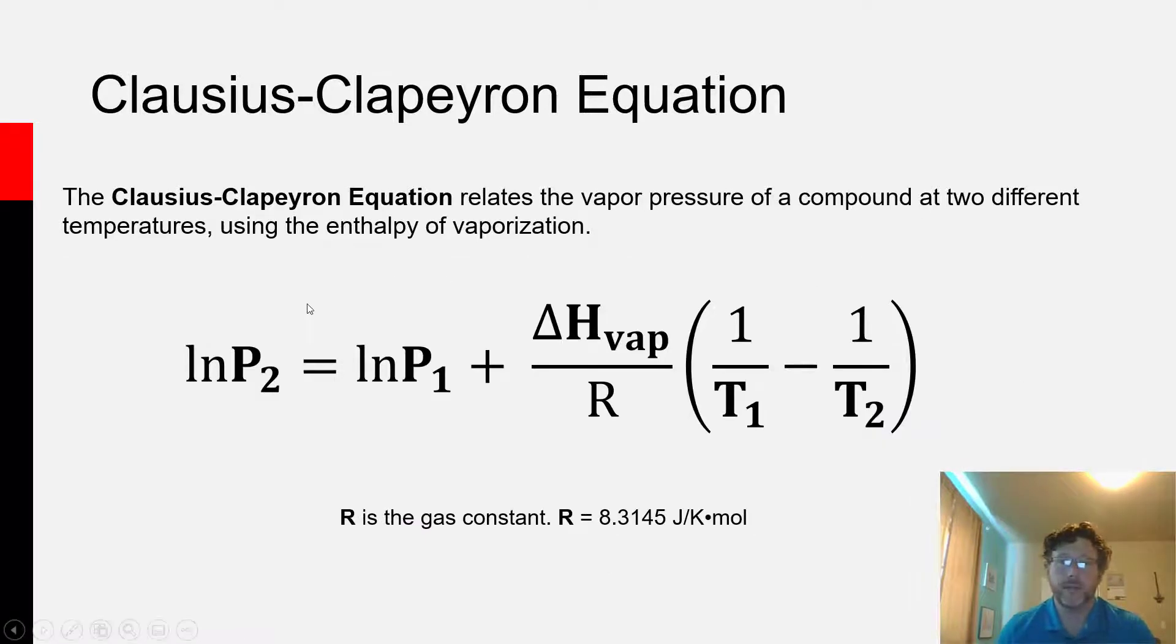This is where the Clausius-Clapeyron equation comes from. It turns out that all liquids have that same straight line relationship, not between vapor pressure and temperature, but between the natural log of the vapor pressure and the reciprocal of the temperature.